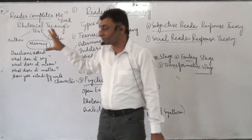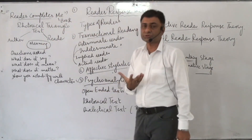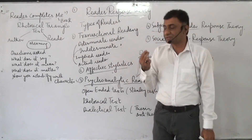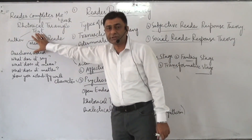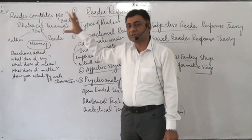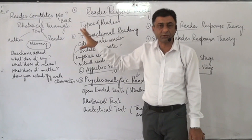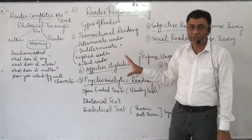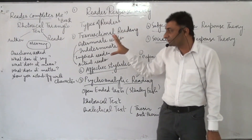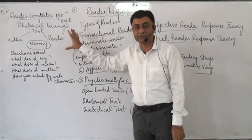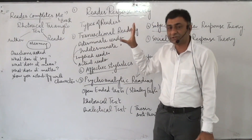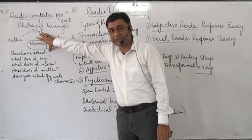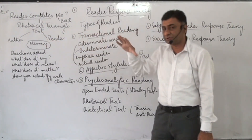A central question in this theory is: who is the source of meaning? The very first position is that the author is the source of meaning. The author's social, political, moral, economic, religious background, culture, and society all mold his personality, and when he is shaped by these forces, he goes on to write a piece of literature.